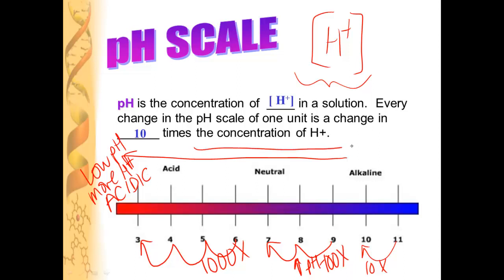The less hydrogen ions you have, all the way up to a pH of about 14, means that you have a higher pH, and that makes you alkaline. Alkaline is just another word for basic.